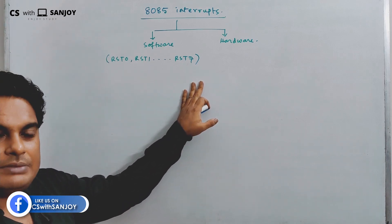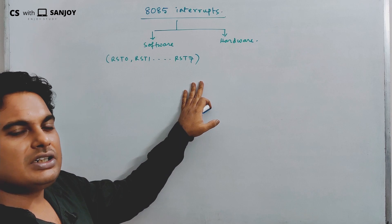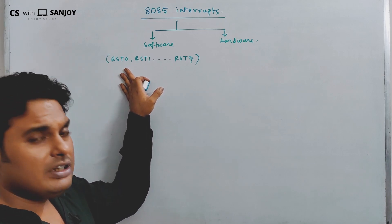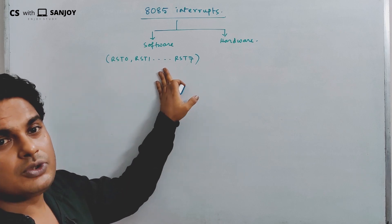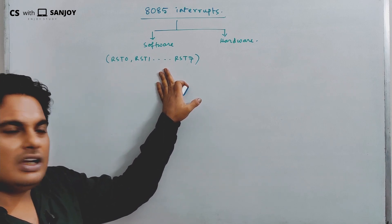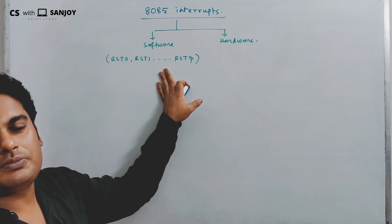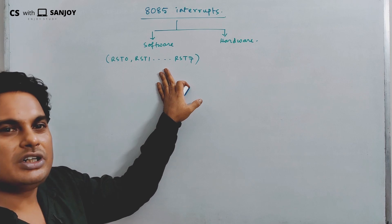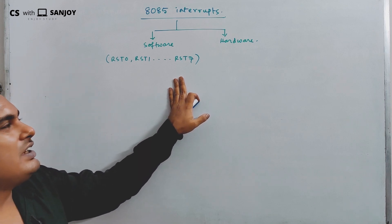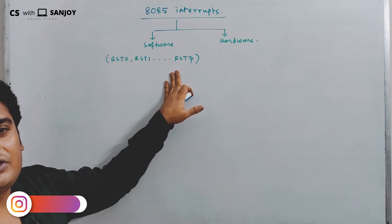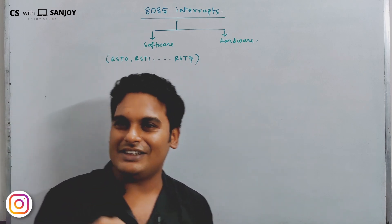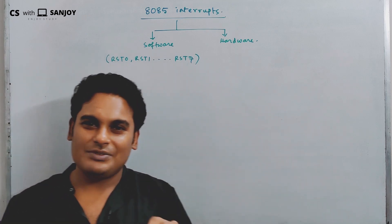There are 8 instructions used to interrupt the system. We will cover the steps of interrupt processing in this video. These interrupts are called 1-byte call instructions. The interrupt is allowed to execute, and the ISR is nothing but an Interrupt Service Routine or Interrupt Service Subroutine.